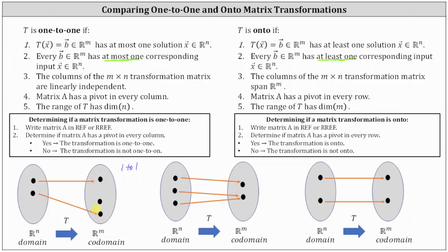Looking at the second transformation, the two vectors in Rn have either one or two corresponding input vectors. Therefore the transformation is not one-to-one, because for one-to-one every vector b can have at most one corresponding input vector. But it is onto, because the two output vectors each have at least one corresponding input vector — the first has one and the second has two. The second transformation is onto, but not one-to-one.